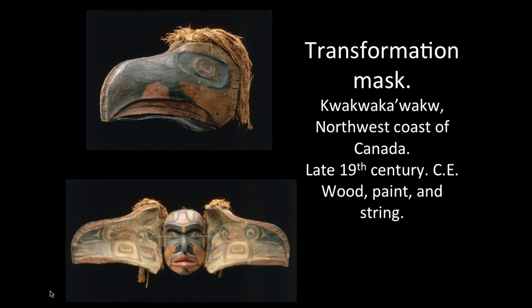The dance reenacted the taming of the Hamatsa, a cannibal spirit, and his three attendant bird spirits. They carved and painted masks that transformed the dancers into Hamatsa and the bird attendants, who would search for victims to eat. The strings you can see coming out of the eyes and dangling at the back are really important — they allowed the dancers to manipulate the mask so that the beaks would open and snap shut with spectacular effect.